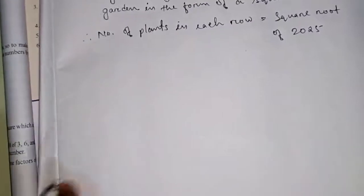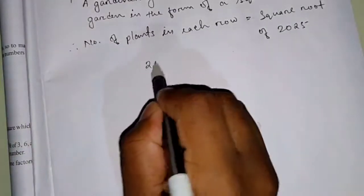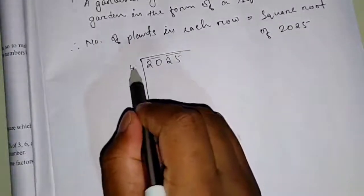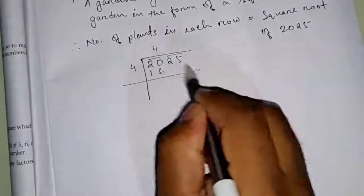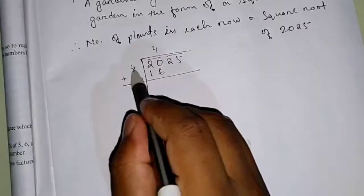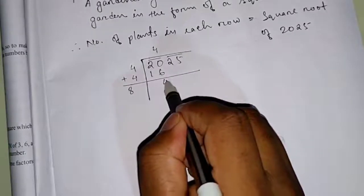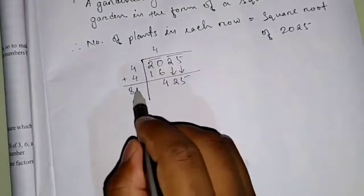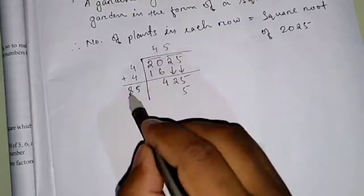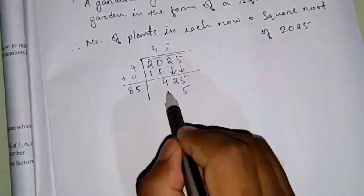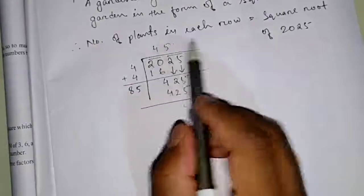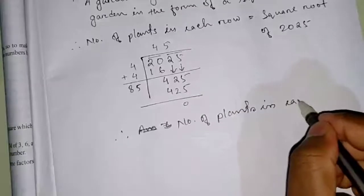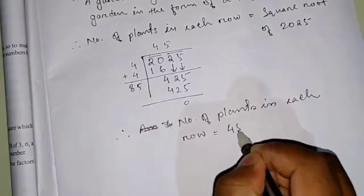So how can we find the square root of 2025? By using the division method. For 2025, first make pairs — there are two pairs: 20 and 25. We give 4, since 4×4 = 16. So 20 minus 16 is 4, bring down 25 to get 425. The divisor becomes 4+4 = 8. We give 5, since 85×5 = 425, remainder 0. So the answer is 45 plants. Therefore, number of plants in each row is 45.